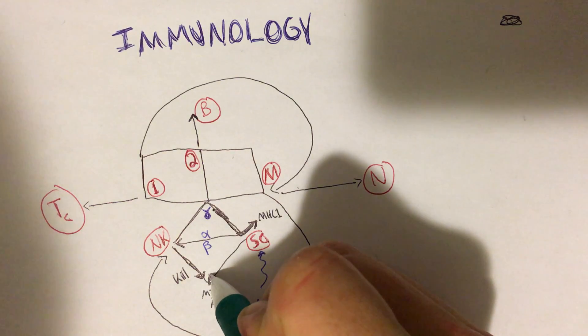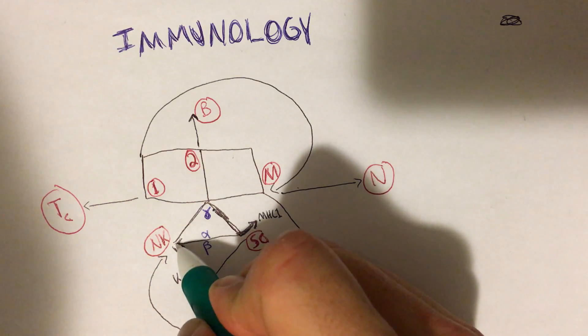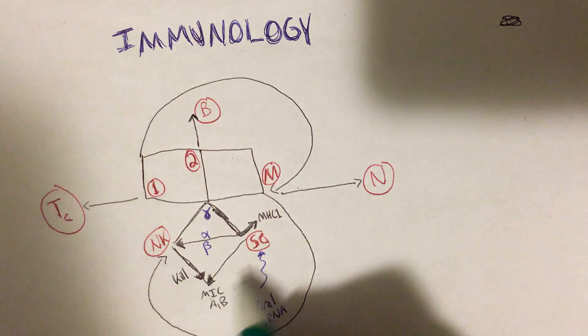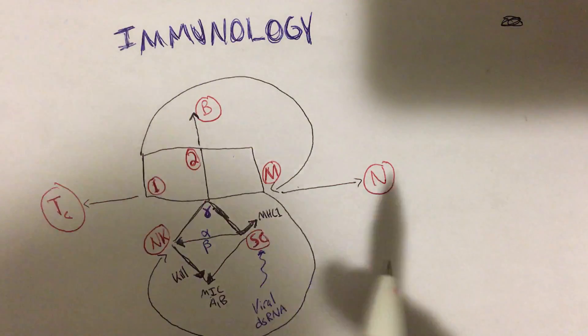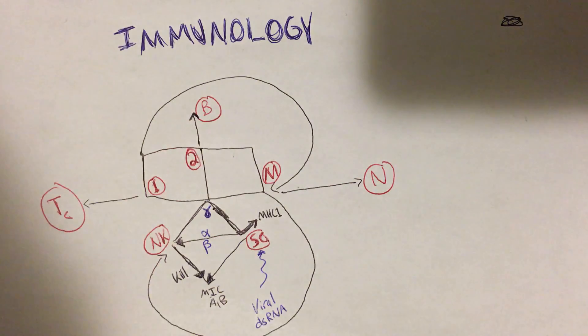It's upregulating these cell surface receptors MIC A and B so that the natural killer cell knows to come and kill that cell. Now, you see I'm drawing in these little arrows and directions here and for where they're going. This is what I mean when I said earlier that you got to know a little bit about immunology to make this work, because you kind of got to tell yourself the storyboard as you draw this.